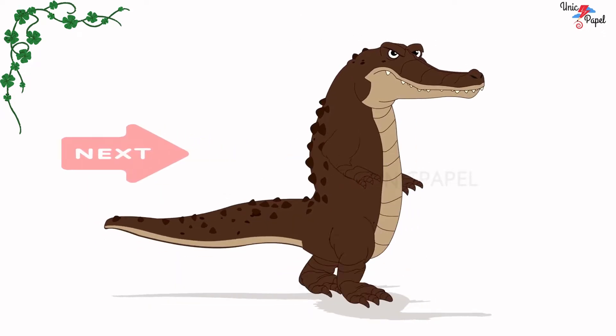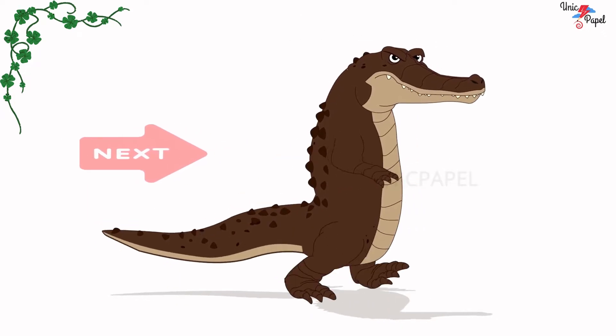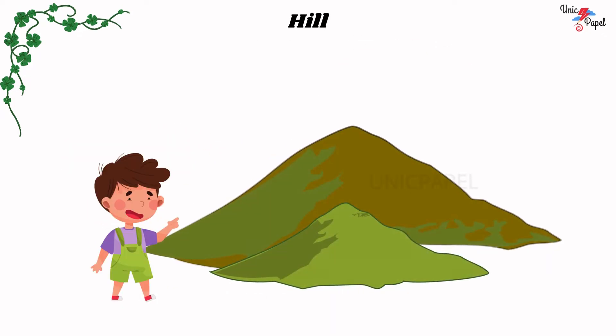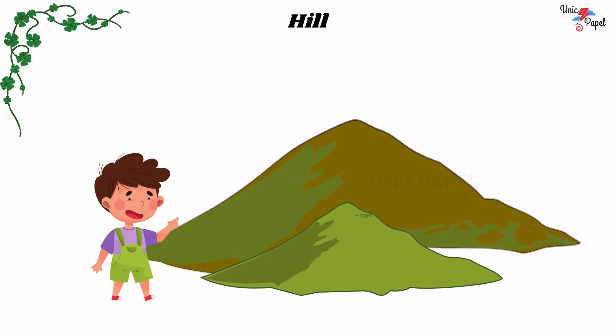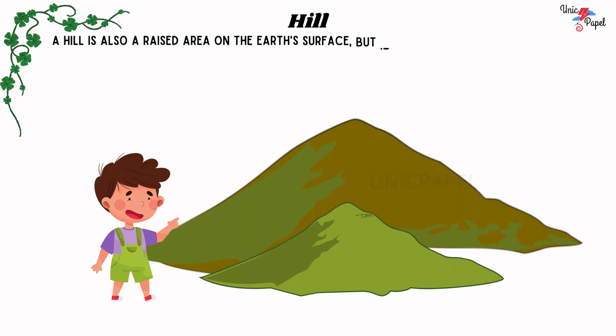Hill: A hill is also a raised area on the earth's surface, but it is not as high and steep as a mountain.